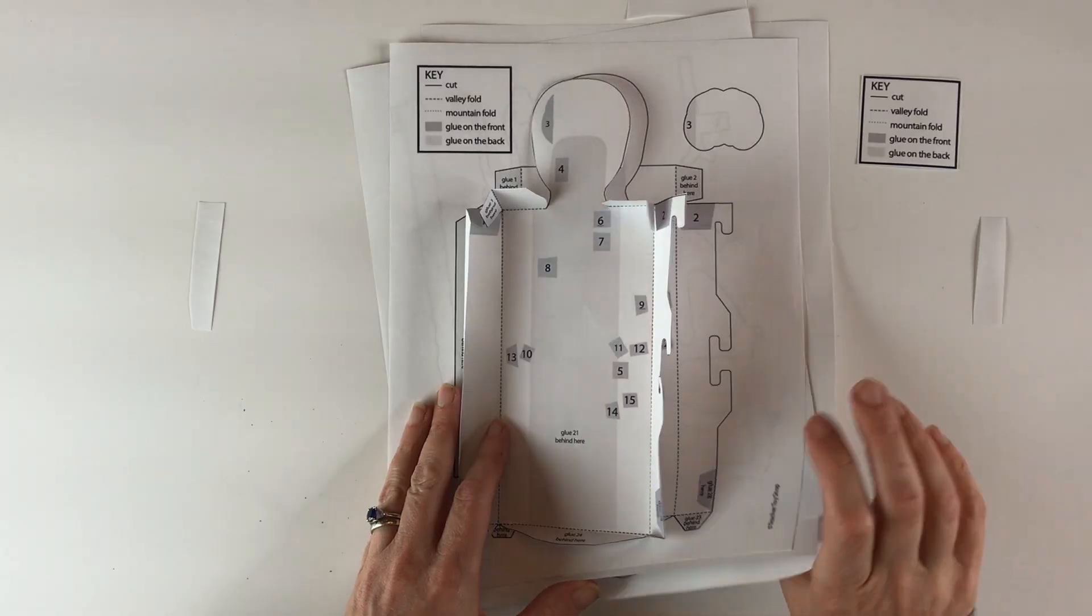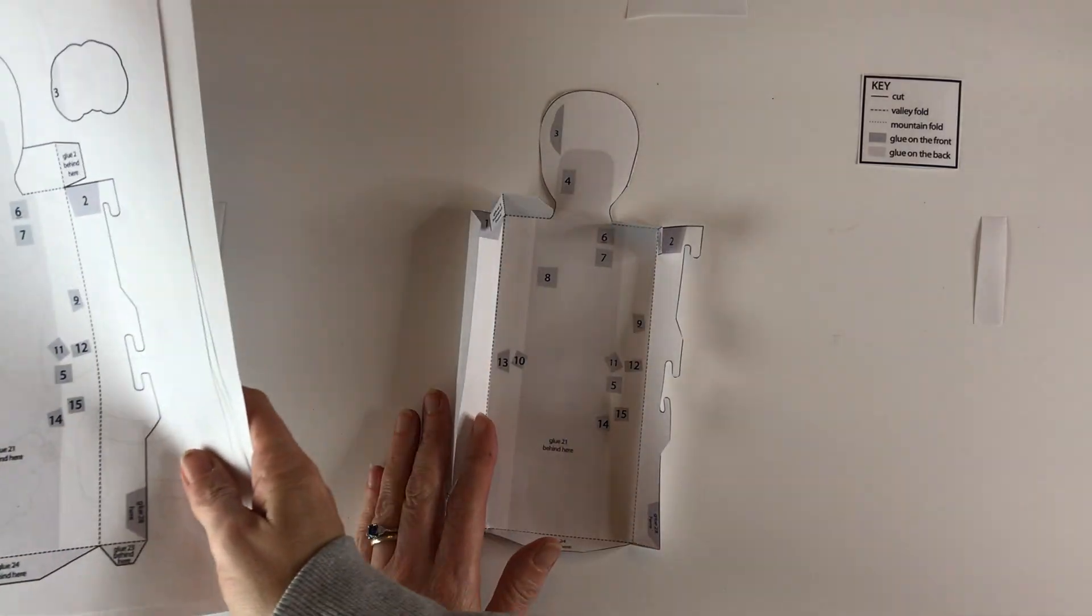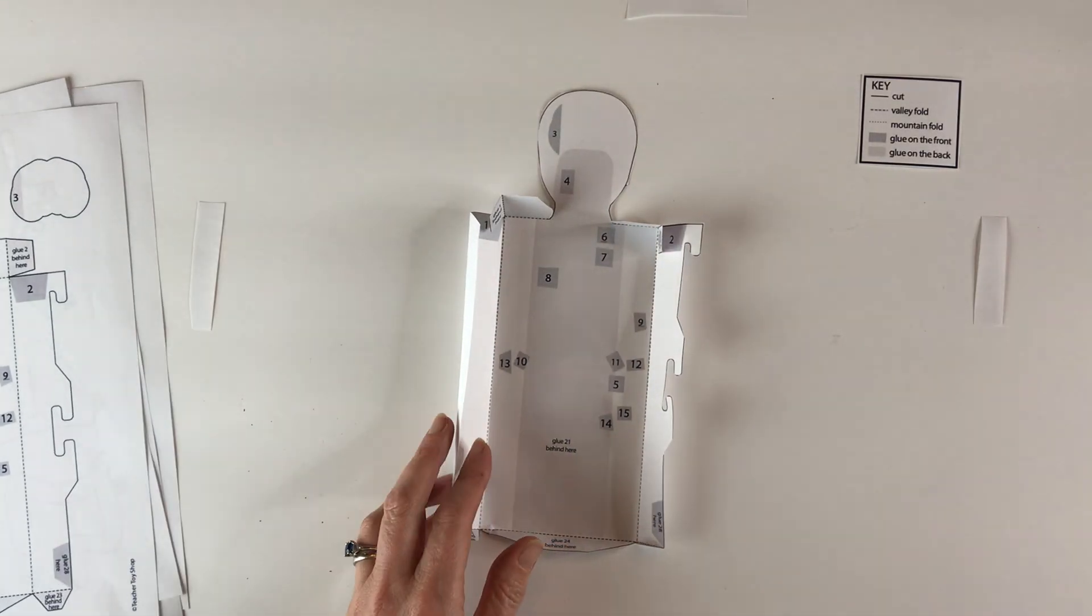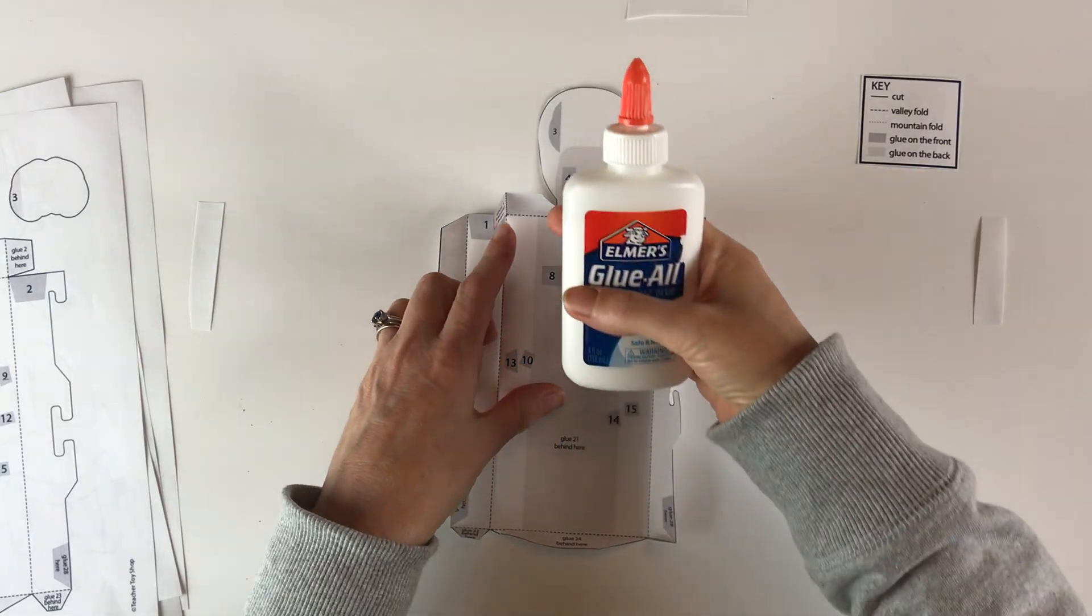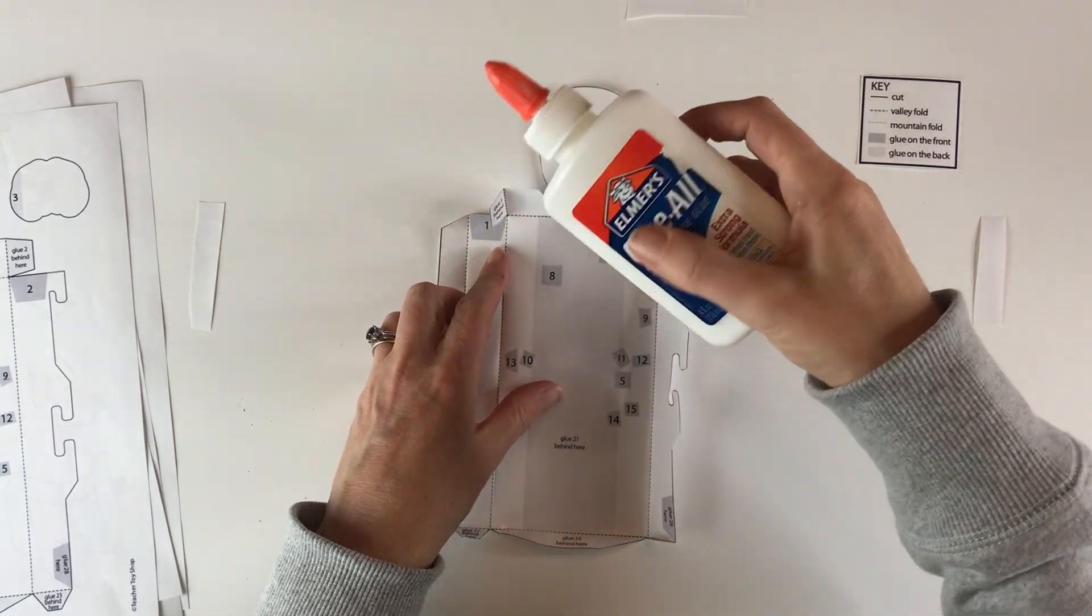So the next step, once you have it cut out and folded, is to glue it. You can use a glue stick, you can use Elmer's glue, any kind of glue really will work. Just follow the instructions. So it says glue one behind here.